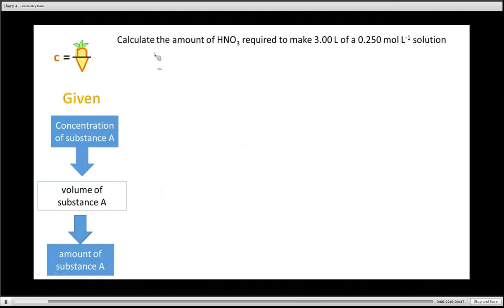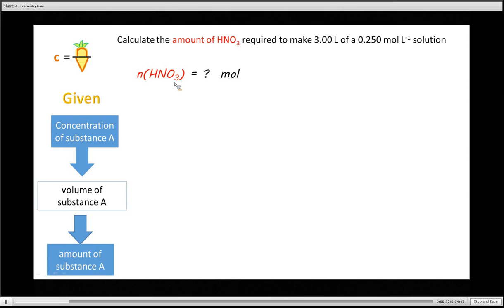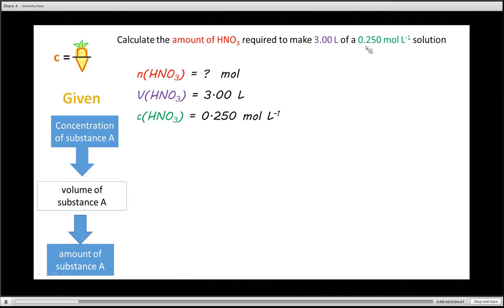So let's look at this problem. Calculate the amount of HNO3 required to make 3 liters of a 0.250 moles per liter solution. So as we did last time, think of what you are given and what you have to work out. So you have to work out the amount of nitric acid and that's in moles. You are given the volume and you are given the concentration.